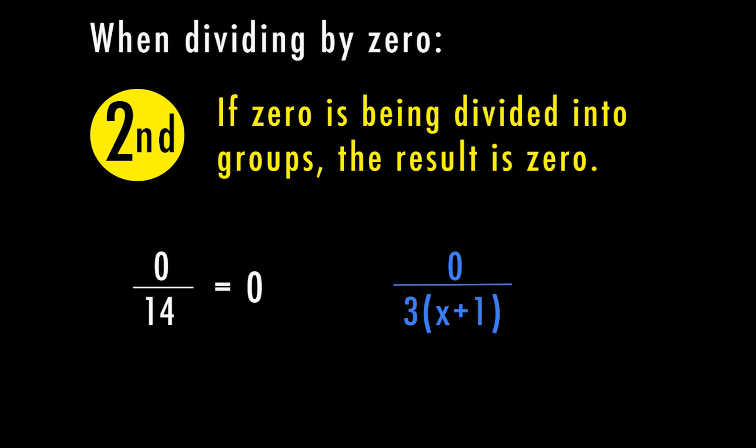What if I have zero divided by 3 times x plus 1? Well, in the denominator, we can actually take this one step further by doing the distributive property, which is another video if you want to look at that one. But if I'm dividing zero by anything, which means I'm going to split up zero into x amount of groups, I'm still going to end up with zero.